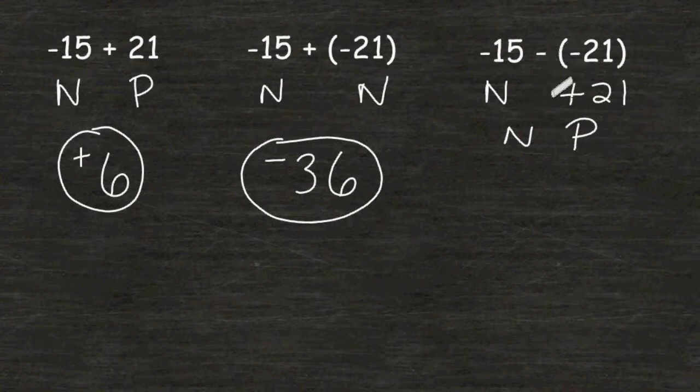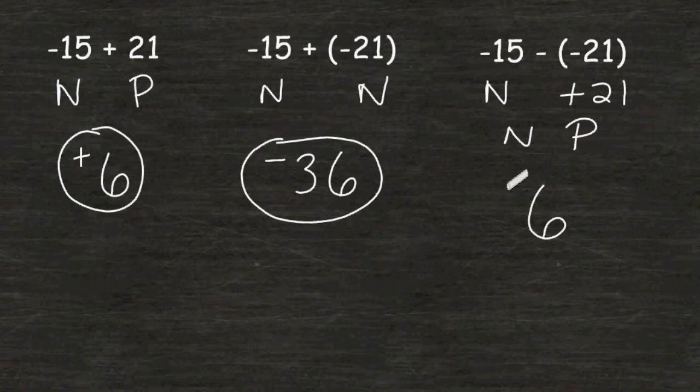21 take away 15 is 6. And we have more positives than we have negatives, making our answer positive.